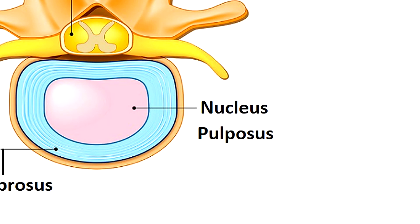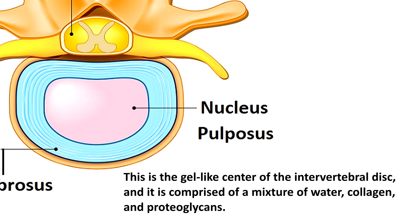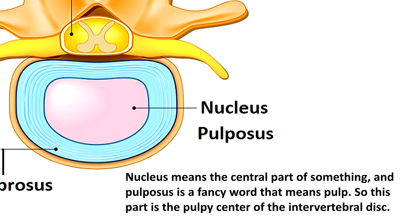The nucleus pulposus is the gel-like center of the intervertebral disc, comprised of a mixture of water, collagen, and proteoglycans. Let the name help you out — nucleus means the central part of something, and pulposus is a fancy word meaning pulp. So this is the pulpy center of the intervertebral disc.